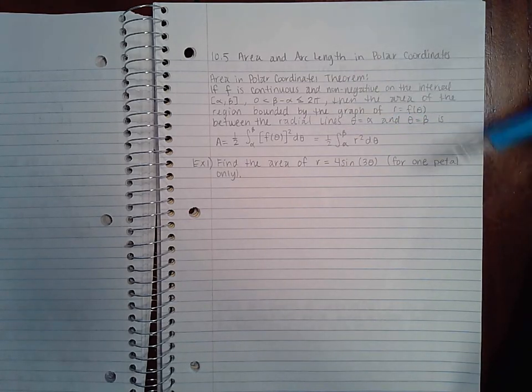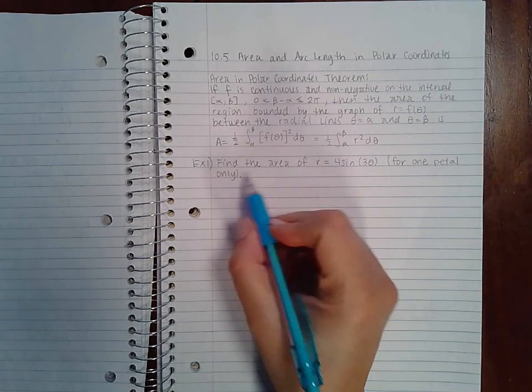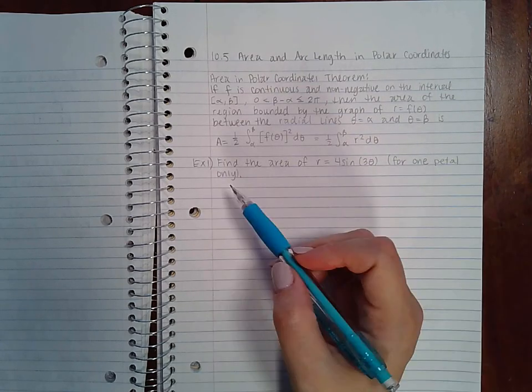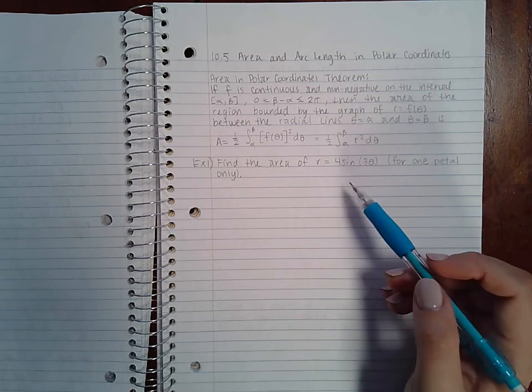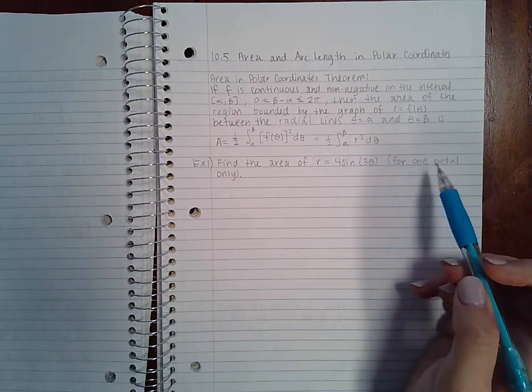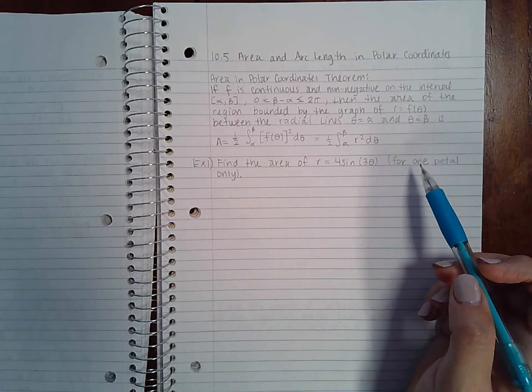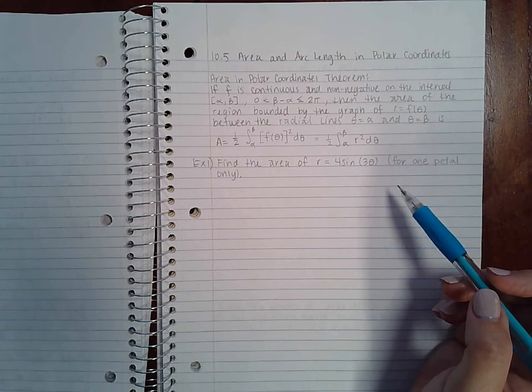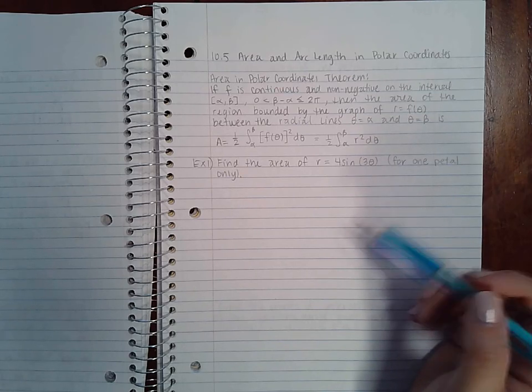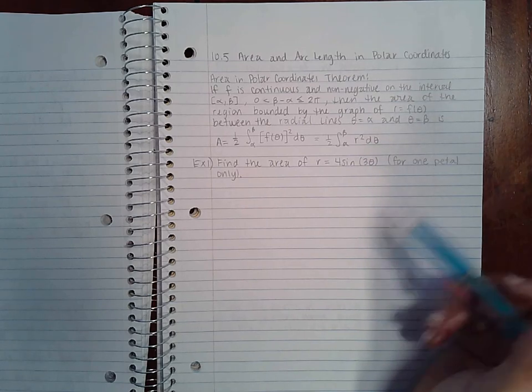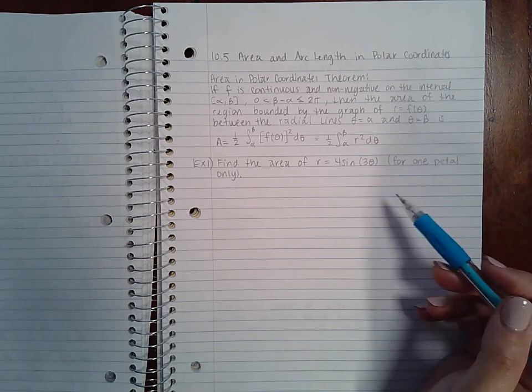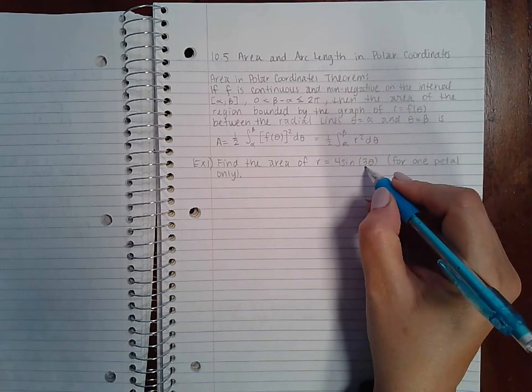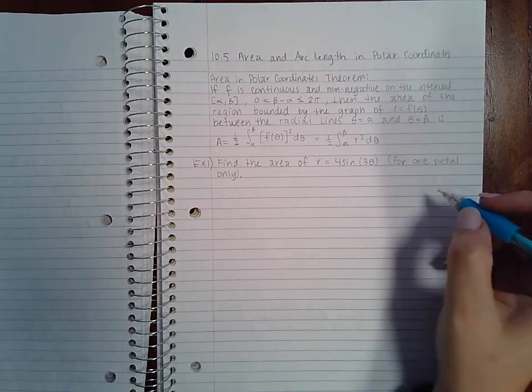For example one it says find the area of r = 4 sin(3θ) for one petal only. Now just for a quick reference for the petals, when you're talking about petals of a polar function, usually the petals occur within π/4 of a unit. You can usually get one entire petal within π/4. So what I typically do is if this is just θ then you will take your increments in terms of π/4.